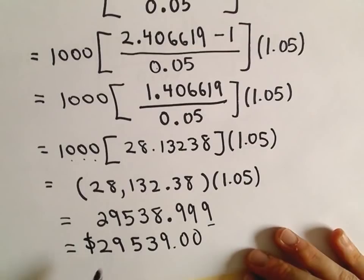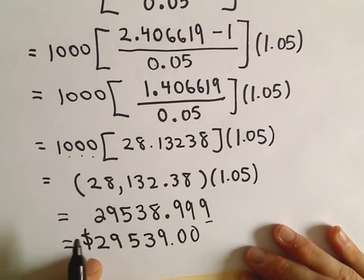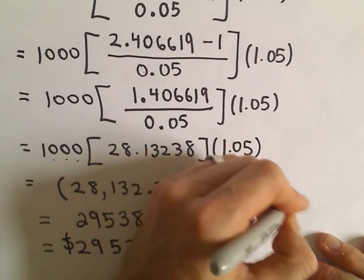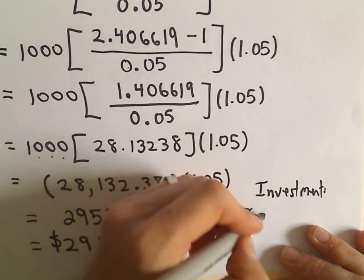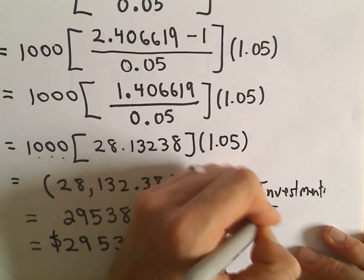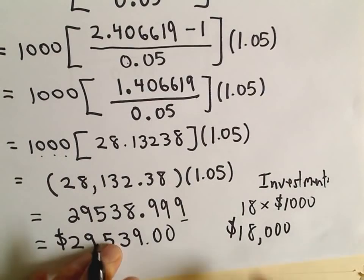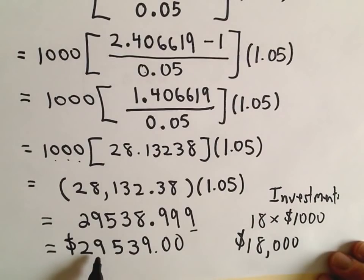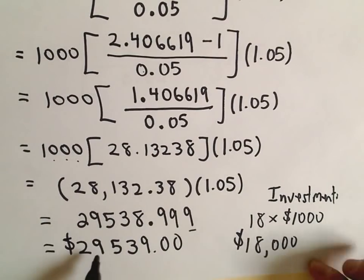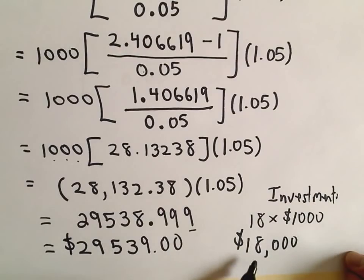So it looks like roughly after 18 years, you're going to have $29,539 in the bank. And again, notice your total investment in this case. Really we've made 18 payments of $1,000. So really you've only put $18,000 into the bank, but you've got over $29,000 accrued. So kind of amazing to me, this is what they say when they say put your money to work. Your money has been at work.